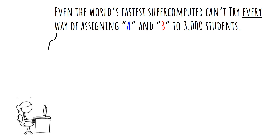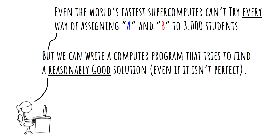The idea is to write a computer program that tries to find a reasonably good solution, even if it isn't perfect. The technique is called a genetic algorithm. Our goal is to do much better than we could do by assigning A and B by hand — better than a human can do — and to get as close as possible to meeting our social distancing goal in as many classrooms as possible.